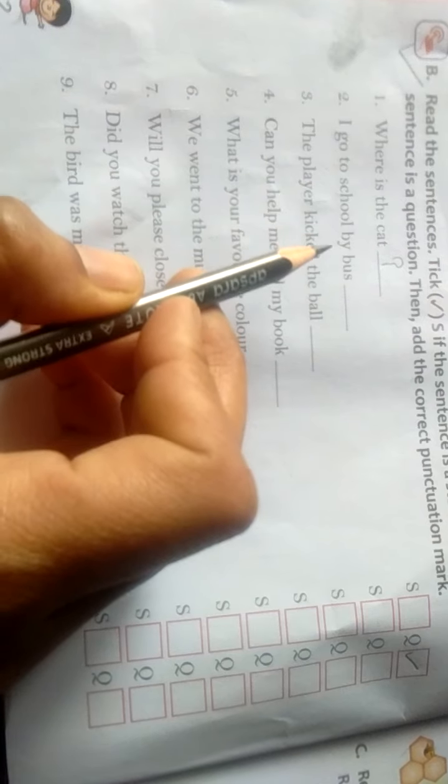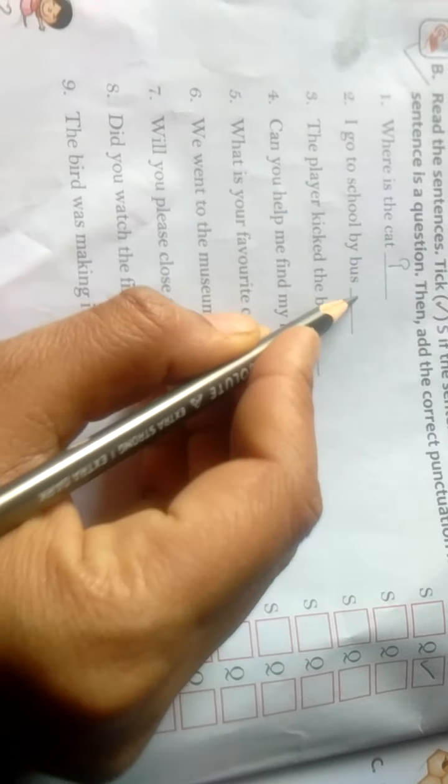First, where is the cat? Ye ek question hai, to yahan pe aayega question mark. Ye Q pe tick ho jayega. I go to school by bus. Main by bus school jata hoon. Full stop. To yeh S pe tick ho jayega.